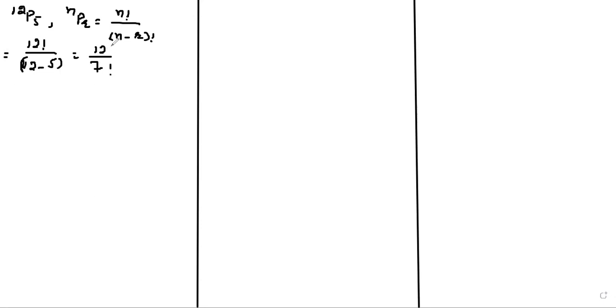This may be written as 12 factorial divided by 7 factorial. So 12 factorial is 12, 11, 10, 9, 8, and 7 factorial, divided by 7 factorial. These two got cancelled and we left with 12, 11, 10, 9, and 8 equals to the answer is 95040.